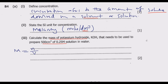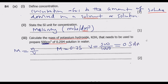We know molality is 0.25 mol/dm³. The volume is 500 cm³, which we convert to dm³ by dividing by 1000, because one dm³ contains 1000 cm³. So 500 cm³ becomes 0.5 dm³.